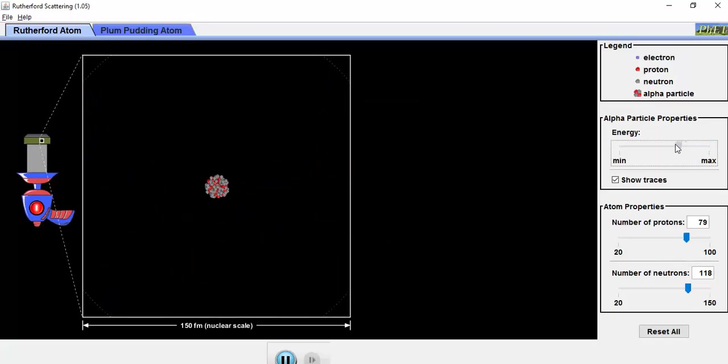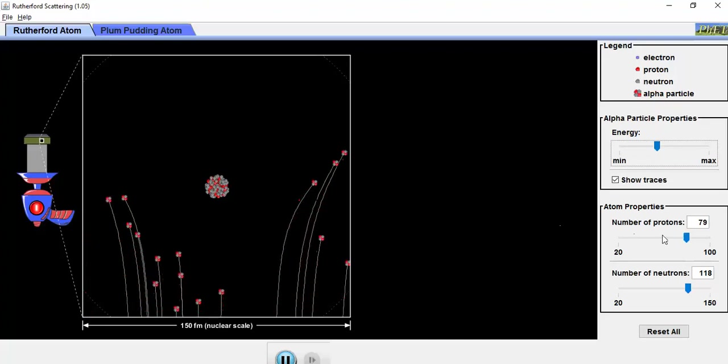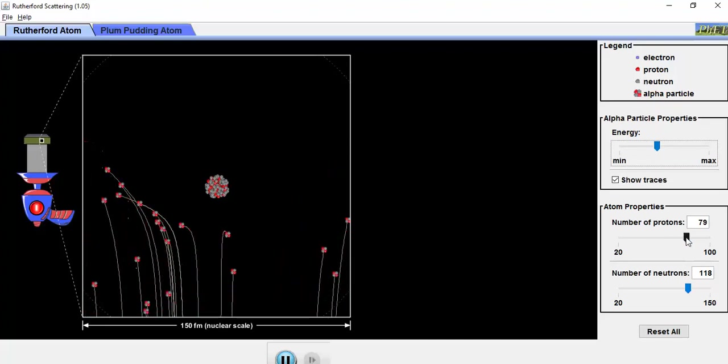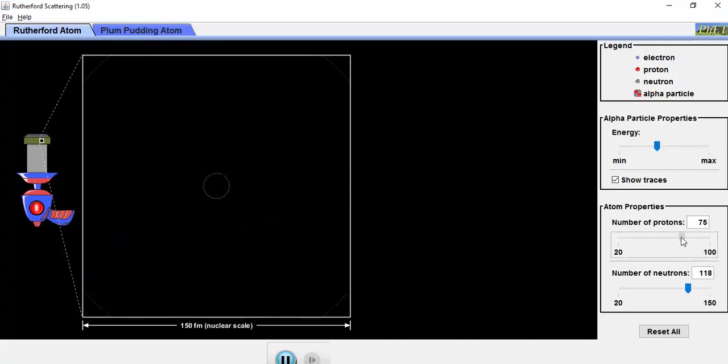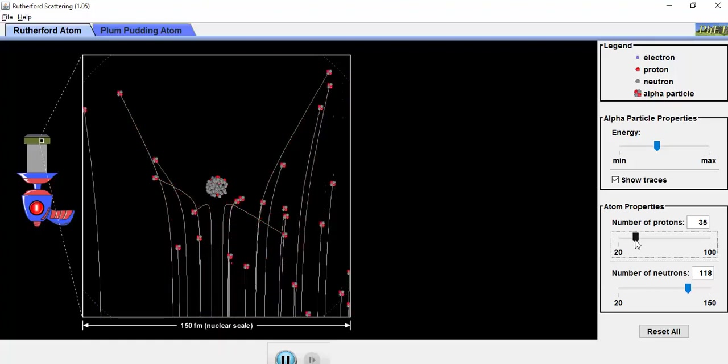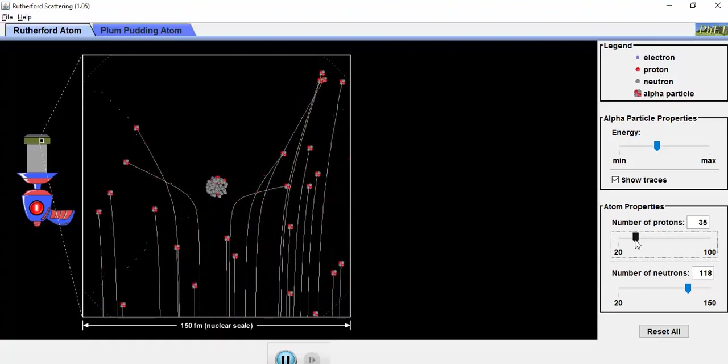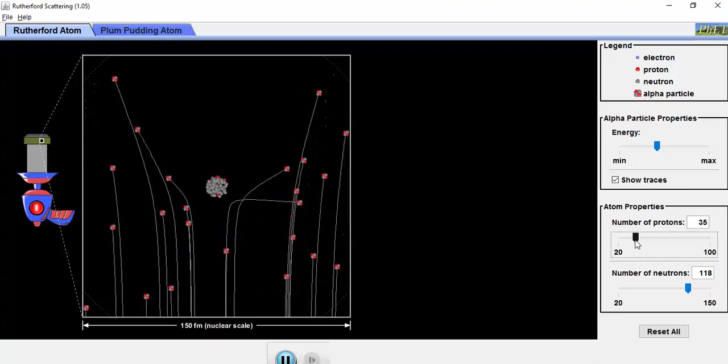Let's put the energy somewhere in the middle. I'm going to decrease my number of protons. What do you notice about the pathways? Are they more or less affected when I have fewer protons than more protons? What do you think about that?